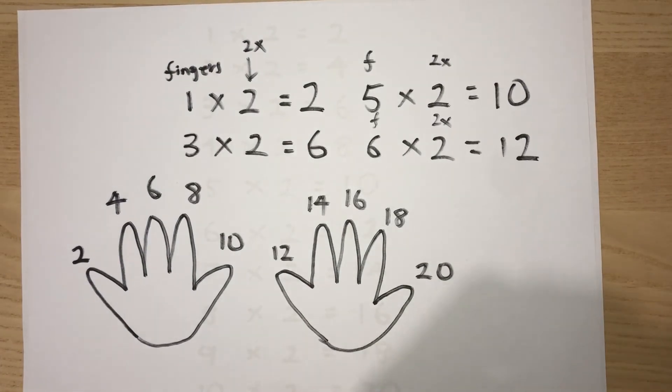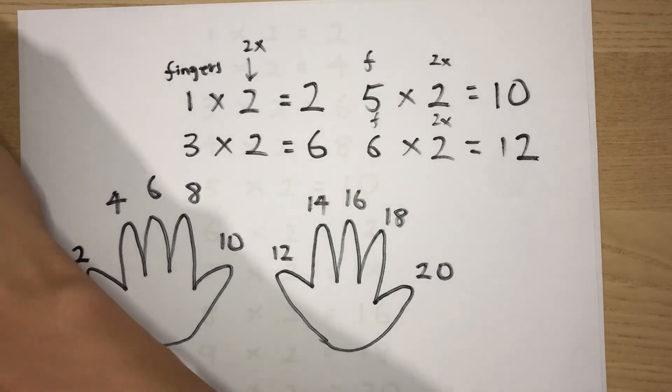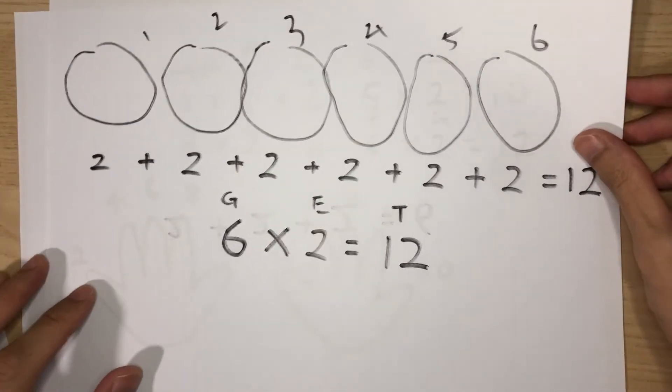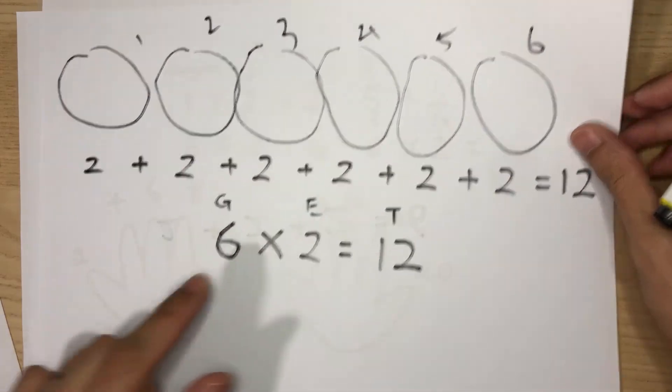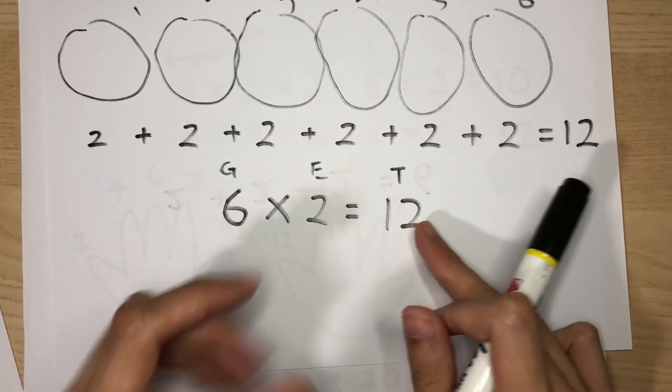See, it is much faster than doing this, for example, because you have to write so many twos. All you have to do is actually just write six times two and it will give you twelve.